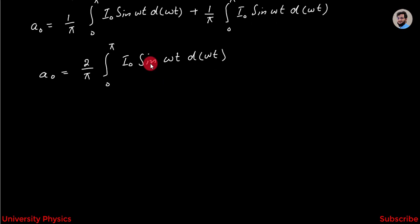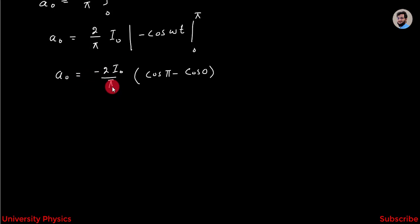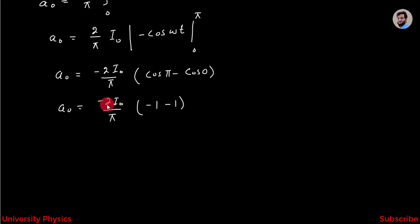We know that the integration of sin(ωt) is -cos(ωt). So we get a₀ = (2/π) I₀ [-cos(ωt)] from 0 to π. This gives a₀ = (-2I₀/π)[cos π - cos 0]. We know that cos π = -1 and cos 0 = 1, so a₀ = (-2I₀/π)(-1 - 1) = (-2I₀/π)(-2) = 4I₀/π. This is the value of a₀.